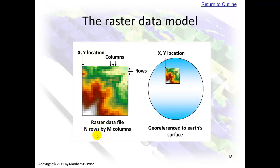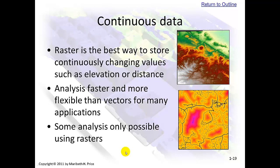The raster data model is georeferenced to Earth's surface. We have columns, we have rows, and this XY location corresponds to the same XY location on the ground. We'll use rasters when we get to Chapter 8. Raster is the best way to store continuously changing values such as elevation or distance. Analysis is faster and more flexible than vectors for many applications, and some analysis is only possible using rasters.